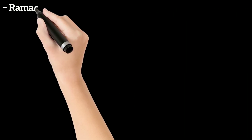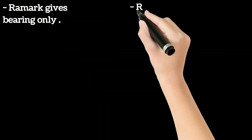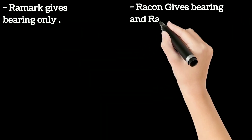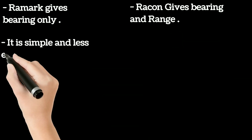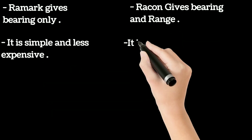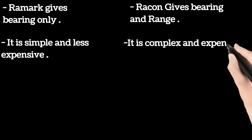RAMARC shows bearing only whereas RACON shows both bearing and range. RAMARC is simple and less expensive whereas RACON is complex and more expensive.